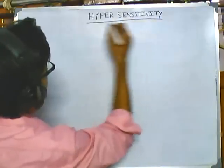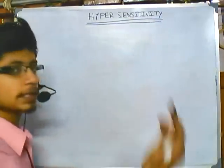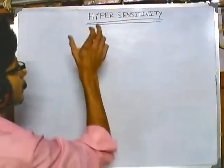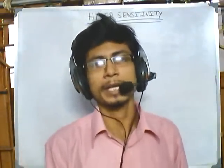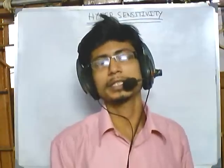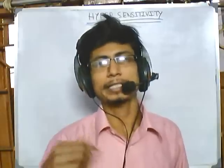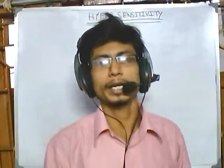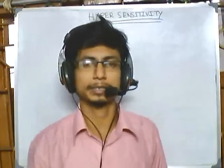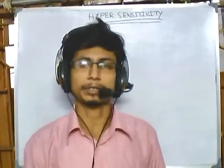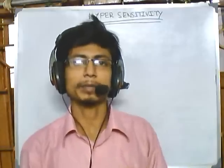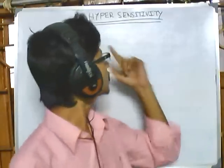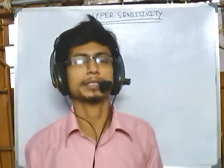Hypersensitivity — as the term suggests — means that the sensitive nature of something is getting hyper, triggered, or increased. In immunology, our immune system is designed to function in two different ways: one is the cellular way, and another one is the humoral way. In the cellular way, immune cells are ready for attacking invading pathogens, and there are also humoral ways to fight against pathogens via the complement system, which we have discussed in our previous lectures.